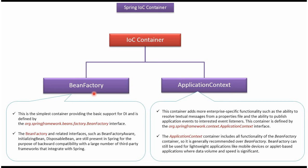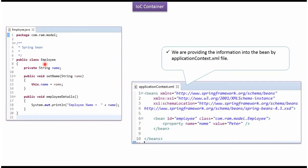Next we will see how to use BeanFactory and how to use ApplicationContext. Here I have defined an Employee class. It has a name property, a setter method for the name property, and an employee details method. This is the Spring configuration file, and here we have mentioned that the employee object should be created and the name property should be set as Peter.